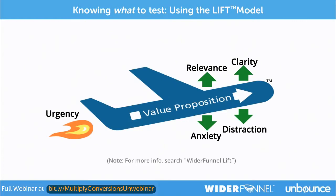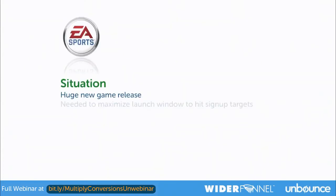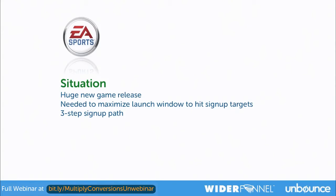Let's take a look at an example. This was for EA Sports, and it shows how even small changes in your conversion funnel — the transactional end — can create great improvement in your conversion rate. They had a new game release and were in their free pre-monetization beta signup period. They needed to maximize this pre-launch window to get their install base signed up and then flip into the monetization model. The goal was to get more free beta signups and reach a target quickly.